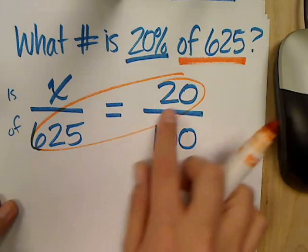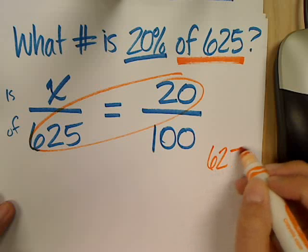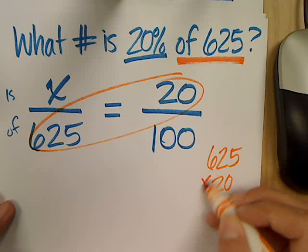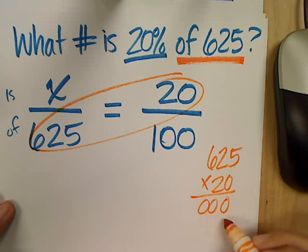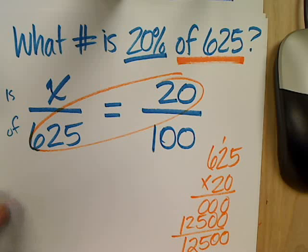So I have 625 times 20. If I don't know it off the top of my head, pull to the side, multiply it out. 12,500. Is that what you got?